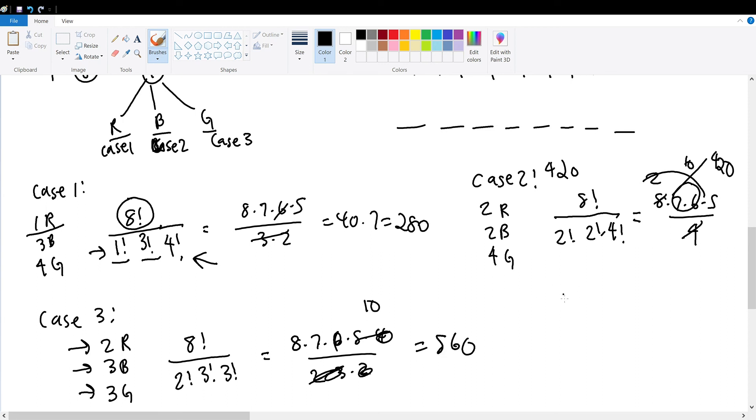So we have counted each case total scenarios. For case 1, we have 280. For case 2, we have 420. And for case 3, we have 560.